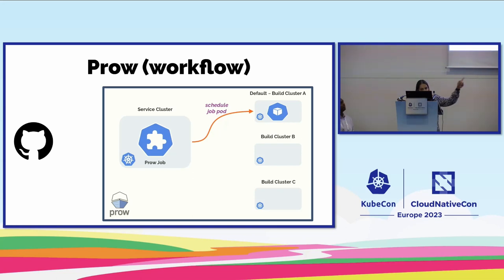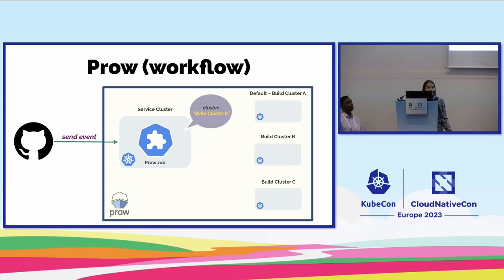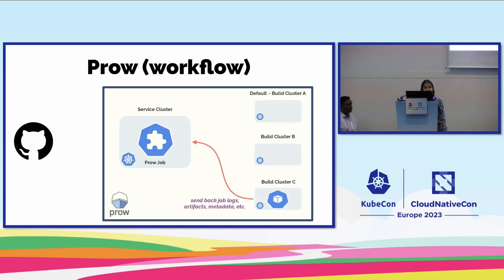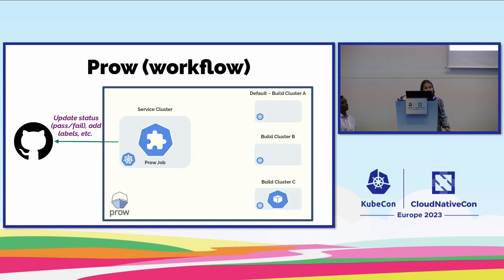When a PR is created or someone comments something like slash foo, it creates events from GitHub and Prow is listening for those events. Prow has something called a hook, which listens for those webhooks and reacts to them by creating a Prow job CRD. That Prow job CRD in turn creates a pod for running the Prow job itself, in one of the build clusters — by default build cluster A, but the job can also specify cluster B or C. Once finished, all logs and artifacts are sent back to the Prow service cluster and updated on GitHub.